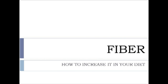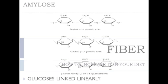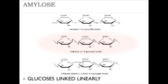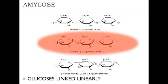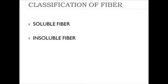Next, fiber. One way of defining fiber is as an undigestible carbohydrate. Structurally, fiber — especially in the form of cellulose — consists of glucose molecules linked by beta-1,4-glucosidic bonds, which are undigestible, meaning no gastrointestinal enzymes can hydrolyze these links. We can classify fibers as either soluble or insoluble.